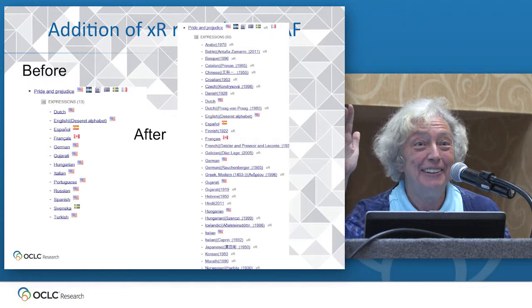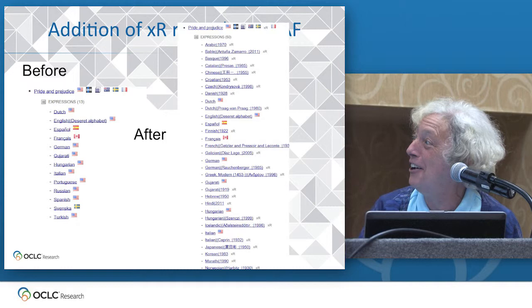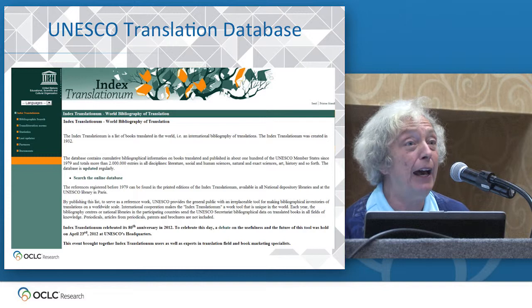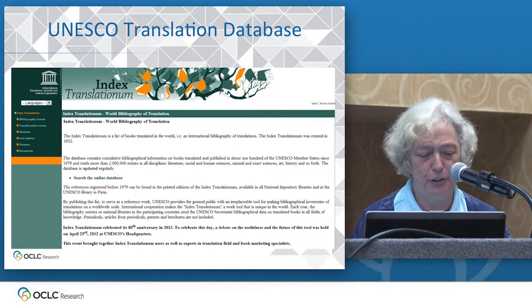So far, we have added 1.3 million XR records to VIAF, representing these works and translations.